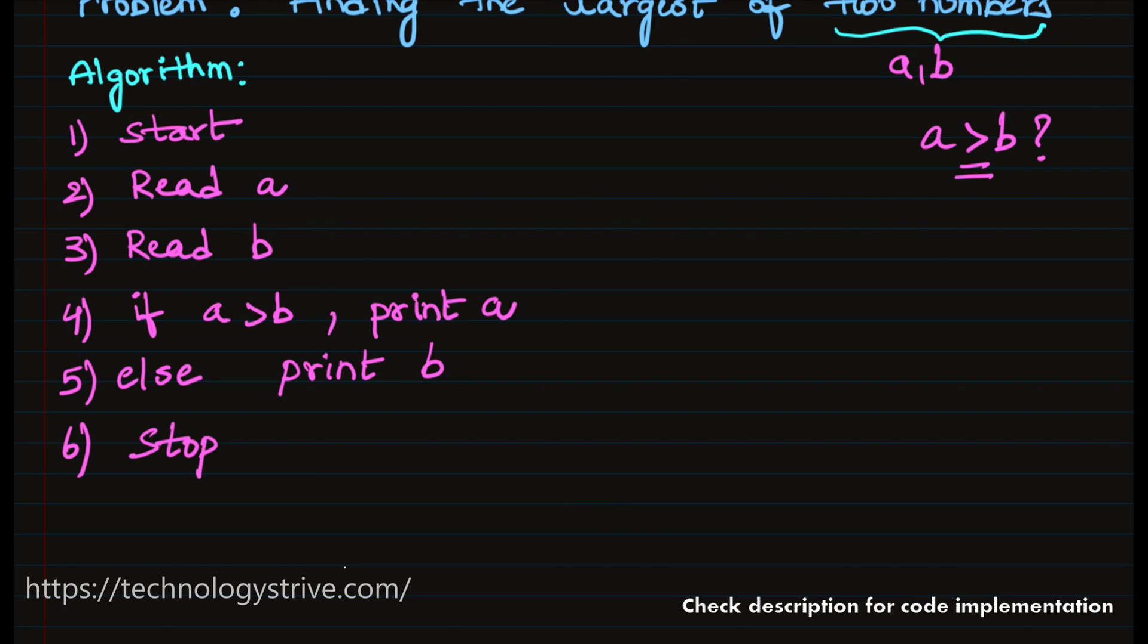Now let's see how we will convert this into the flowchart. First, what have we written? Start. Second, I have to read input value a. So what is the symbol we are going to use? Whenever we are going to read input or print output, we are going to use parallelogram. And again, I have to read value b also. From one symbol to another symbol, I am connecting using flow line. So read b.